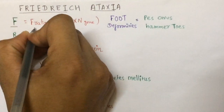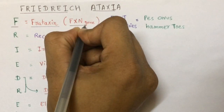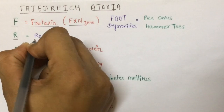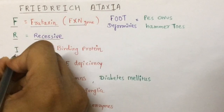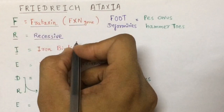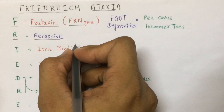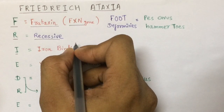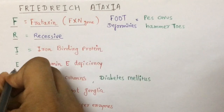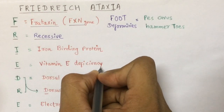F means Friedreich's Ataxia, which is encoded by the FXN gene. R means it is an autosomal recessive disorder. I means iron-binding protein — Friedreich's Ataxia involves frataxin, an iron-binding protein that helps in the assembly of iron-sulfur clusters, which are essential for mitochondrial enzymes involved in oxidative phosphorylation.